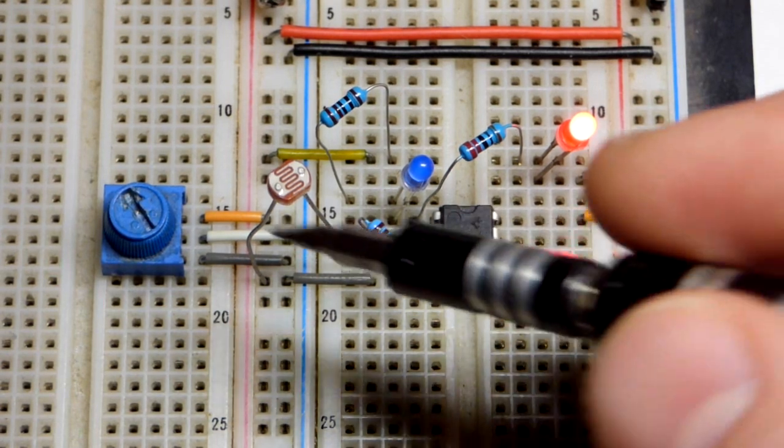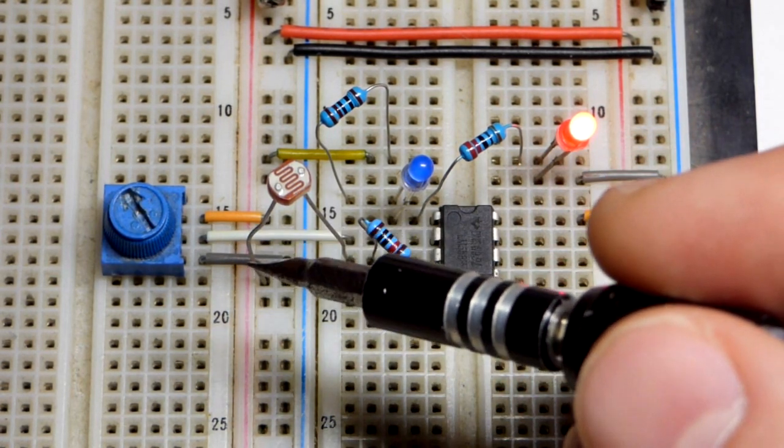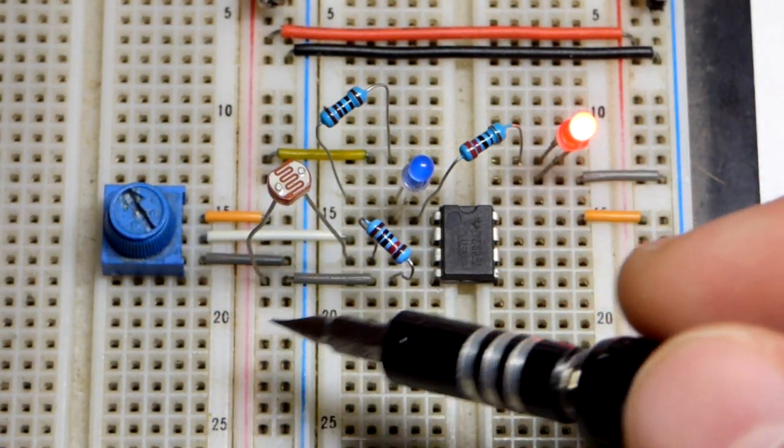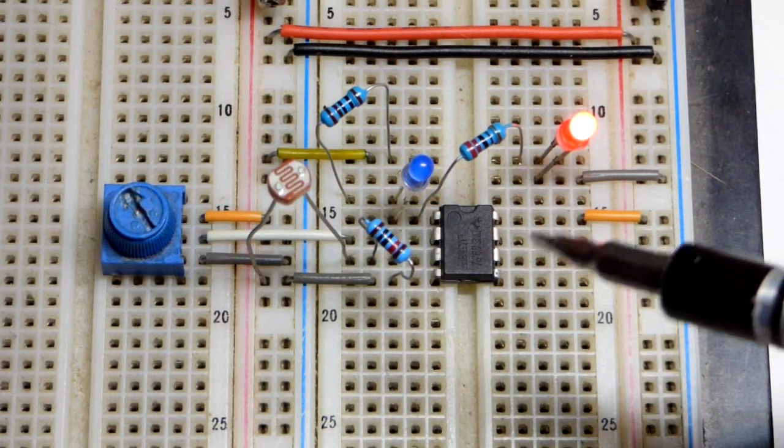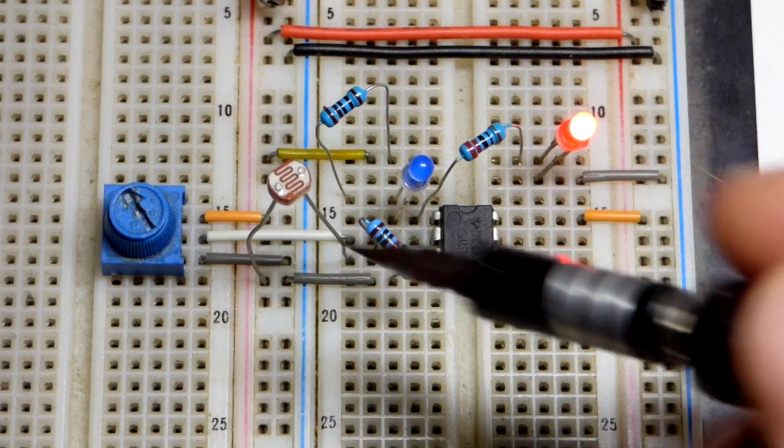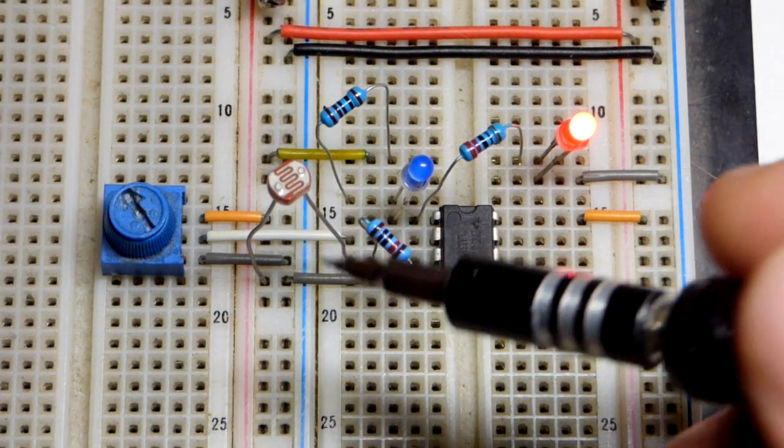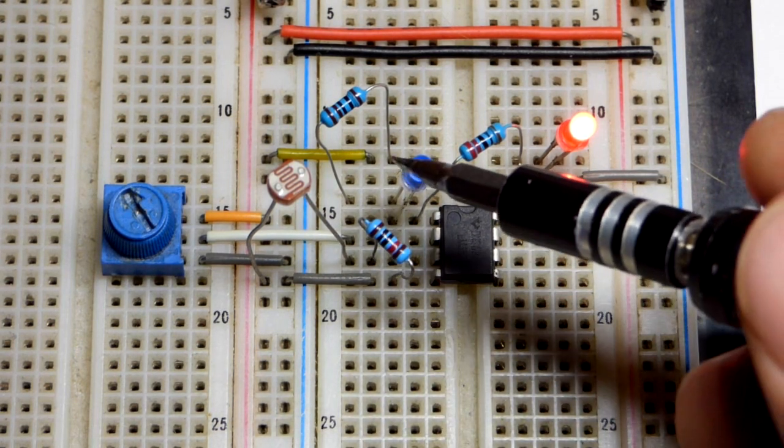So we have the inverting input going to the trim pot. It's across the supply rail. It outputs up to 5 volts or down to 0 volts since we're using 5 volts at the supply right there. And this one pretty much does too, depending on how much light is falling on it. It can go up close to 5 volts and down close to 0 volts.